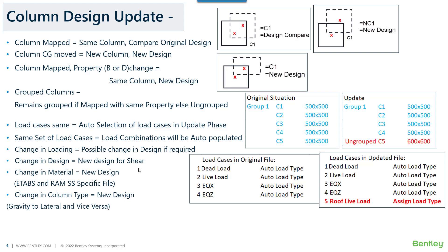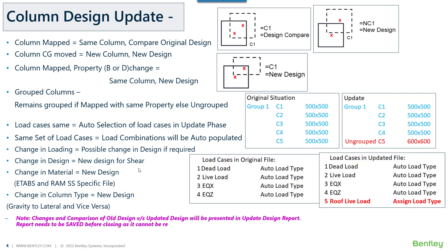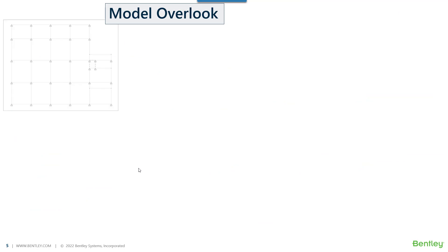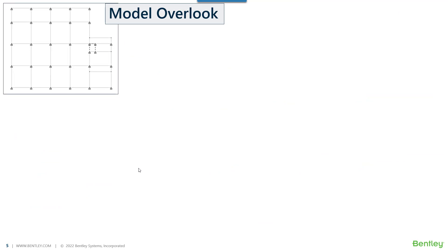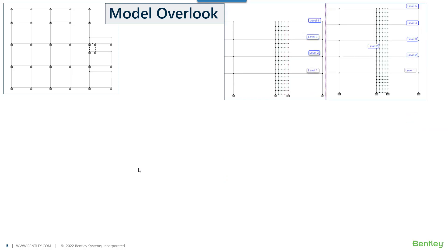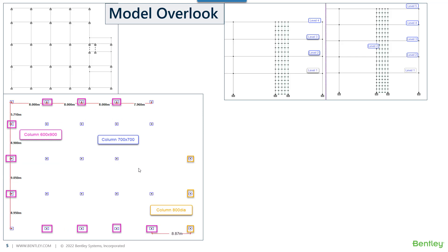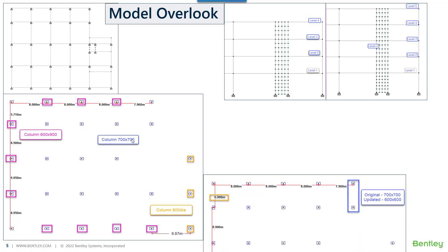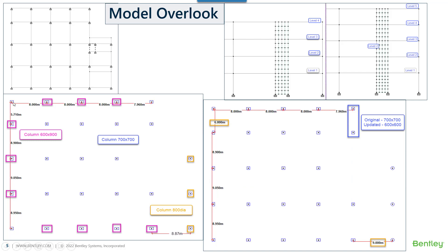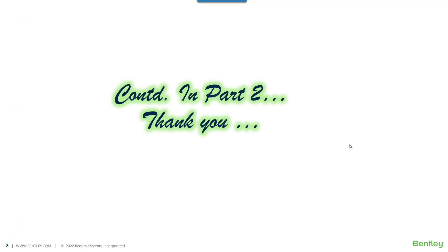Now let me take you to the actual demo. This is our actual model — the plan view. The original file has four levels, and an extra level has been added in the updated file. The model includes rectangular columns of 600 by 900, circular shaped columns, and square columns of 700 by 700. In the updated file, the grid distance has been changed and the size of two columns has been updated from 700 by 700 to 600 by 600, so we can see how this is handled in RCDC. We will look into more details in the next parts of the video.